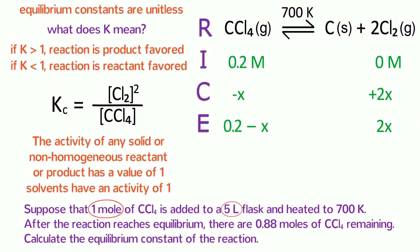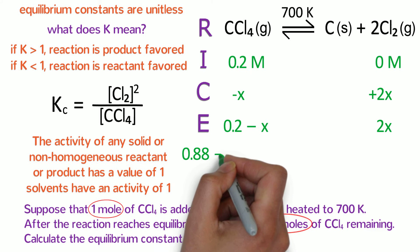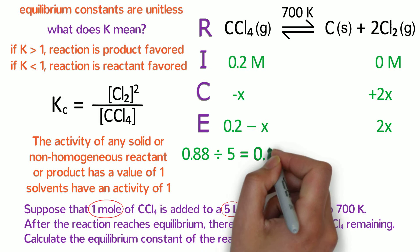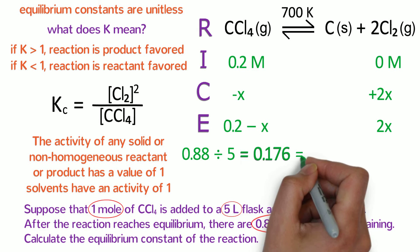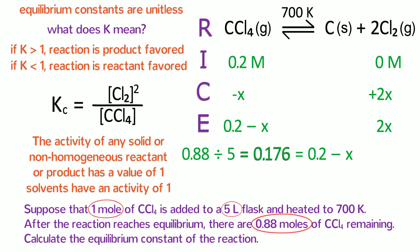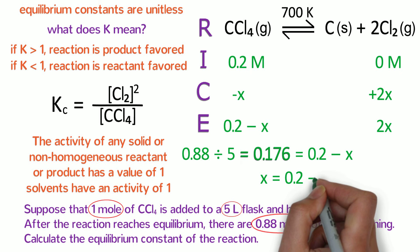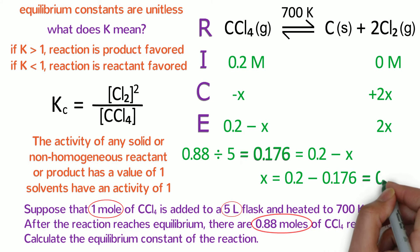Now, how do we figure out X? Looking back at the problem, it says that there are 0.88 moles of CCl4 at equilibrium, so we can calculate the equilibrium concentration of carbon tetrachloride, which is 0.88 moles divided by 5 liters or 0.176 molar. The equilibrium molarity of CCl4 is also equal to 0.2 minus X. If we add X to both sides and subtract 0.176 from both sides, we can calculate X to be 0.2 minus 0.176, which equals 0.024.